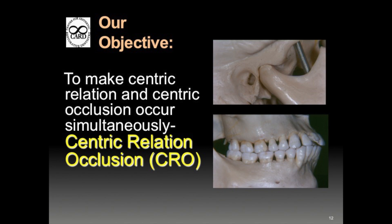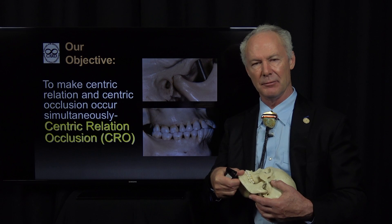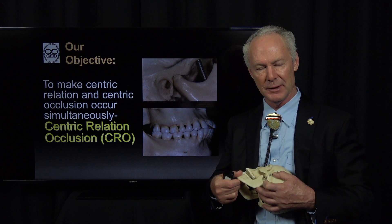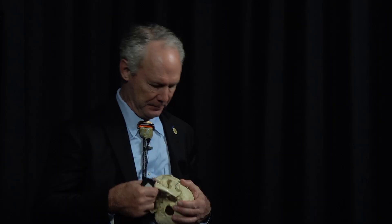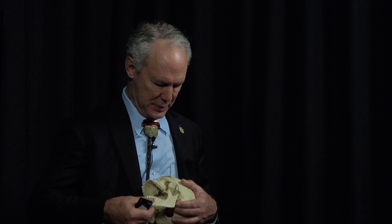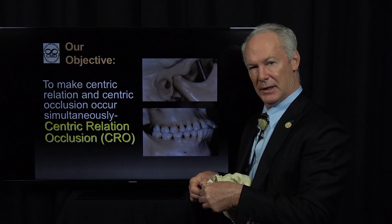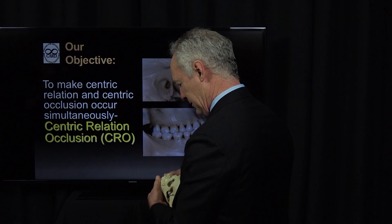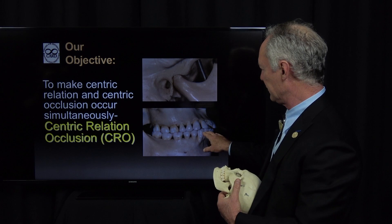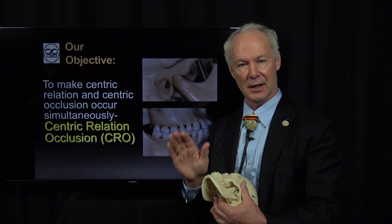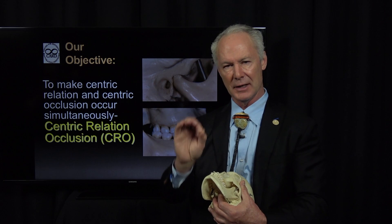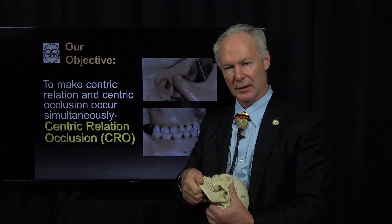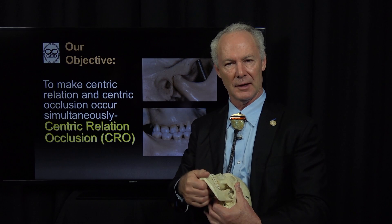Our objective is centric relation occlusion. We want the teeth to contact maximally and stably when the condyle is maximally seated in the fossa. When I manipulate the condyle into the most stable, maximally seated position in the fossa — that's centric relation. And if the teeth are also in maximum contact, it means enough teeth on either side should contact at precisely the same time when the condyle is seated in centric relation so that the bite is stable.